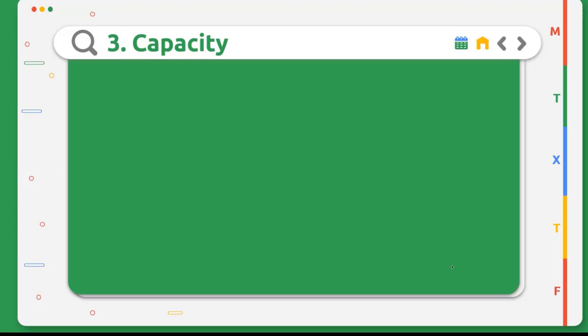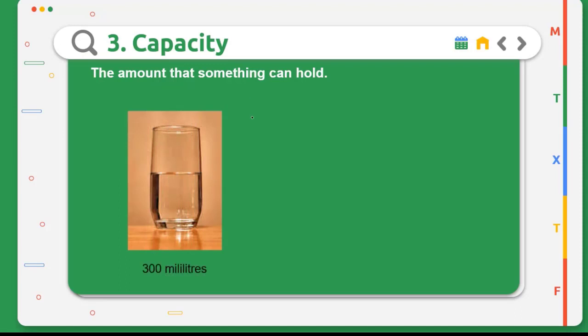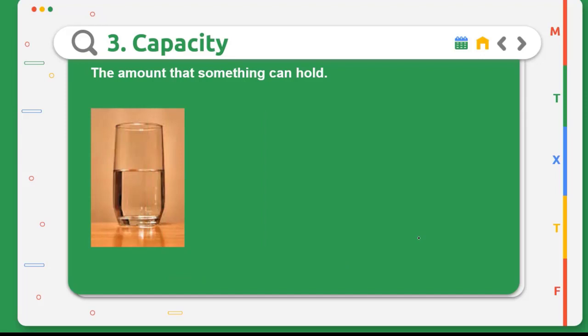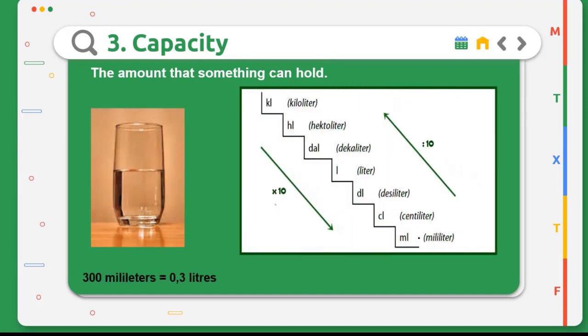Next, we will learn about capacity. Capacity has a definition: the amount that something can hold. This glass can hold 300 milliliters of water, or this bowl can hold 2 million 500,000 liters of water. This glass can hold 300 milliliters.